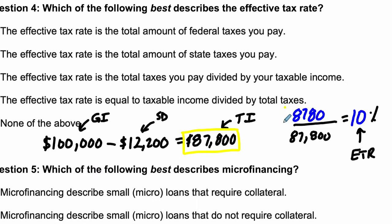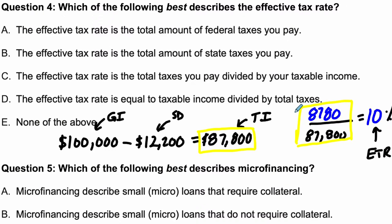So it's out of your taxable income, not your total income, because we want to find out what you're actually paying in terms of taxes out of what you can be taxed on — not just out of your whole gross income, which you're not being taxed on.